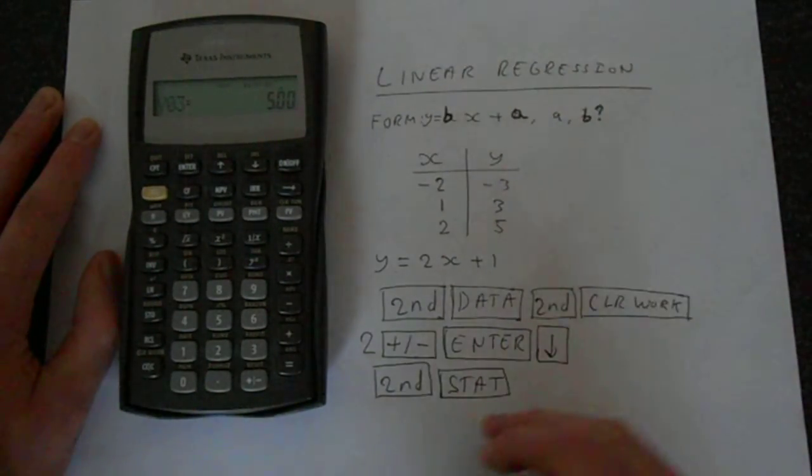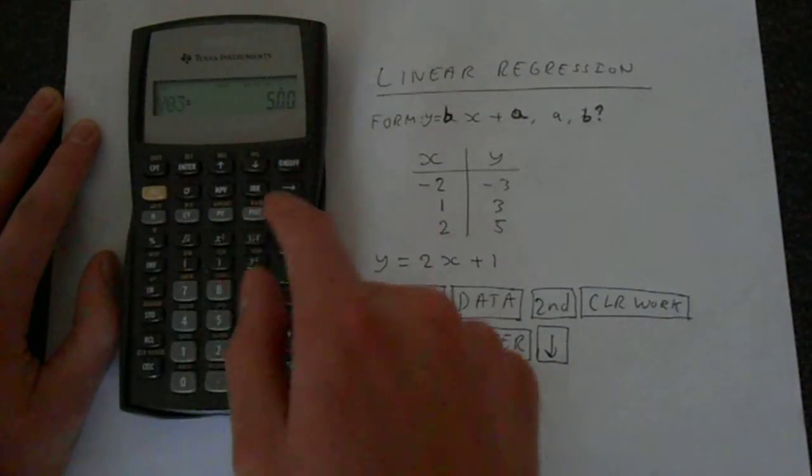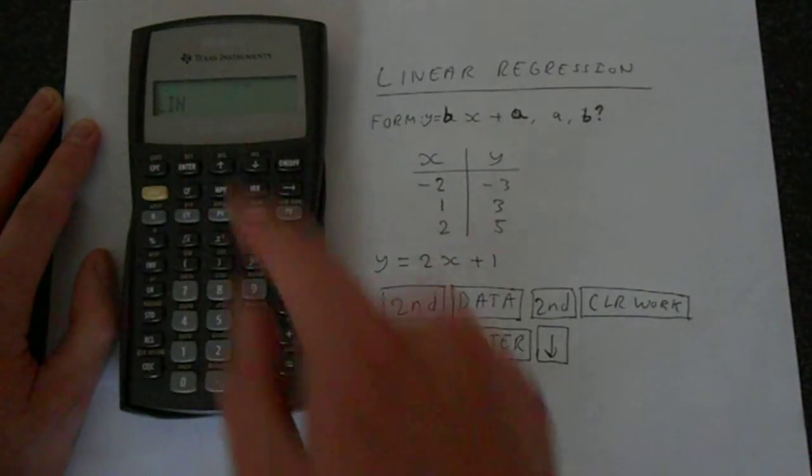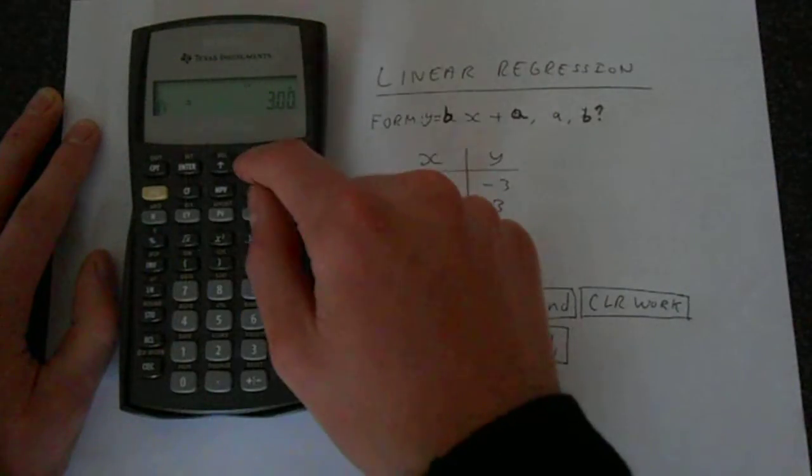So let's do the actual calculation. We just do second function, stat. This calculator makes it really easy. We've done second function, and we've got stat is on number 8. It comes up with this lin, and just press down—it calculates everything for us.